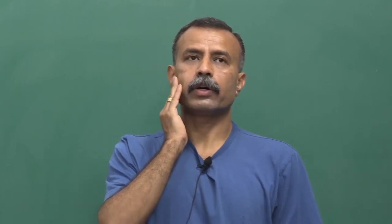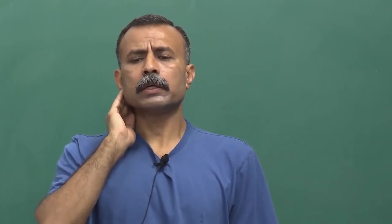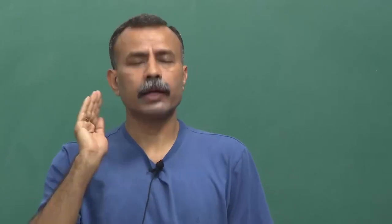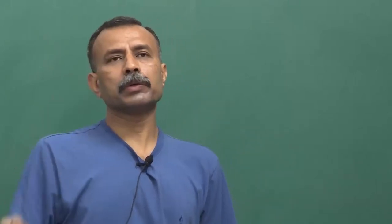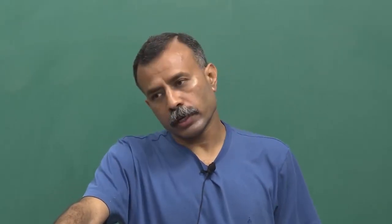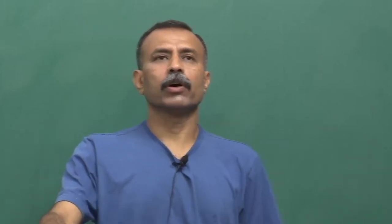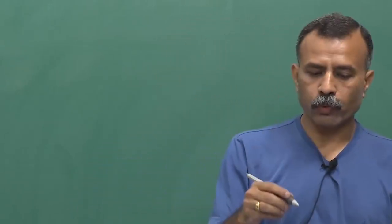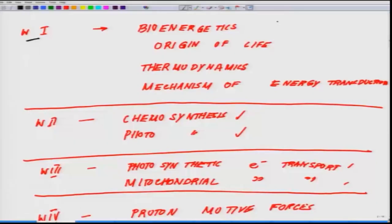Welcome back to the lecture series on Biogenetics of Life Processes. Today is our second lecture. In the first lecture, we talked briefly about the different sources of energy — the sun or stars like the sun. For Earth, the sun is the nearest star and is the perennial source of our energy. We also talked about chemical sources of energy or chemosynthesis. We briefly outlined the four weeks we will be dealing with — week one covers bioenergetics and origin of life, along with thermodynamics and mechanism of energy transduction.